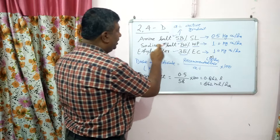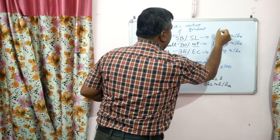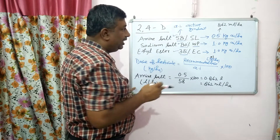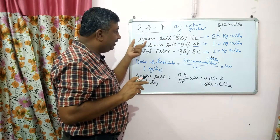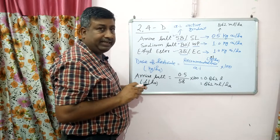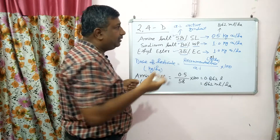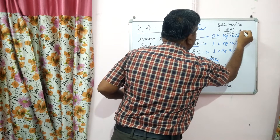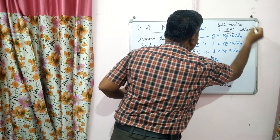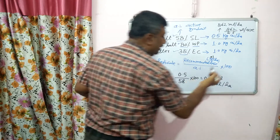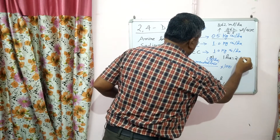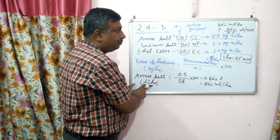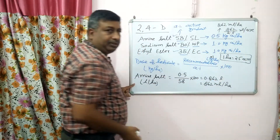So the dose of amine salt at the rate of 0.5 kg AI per hectare is 862 ml per hectare. We require 862 ml of amine salt for one hectare area. If it is to be converted into per acre, divide by 2.5, because one hectare equals 2.5 acres. So if the question asks in acres, first calculate the dose per hectare, then divide by 2.5.